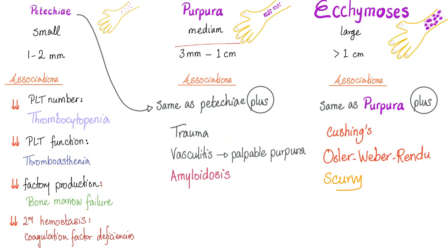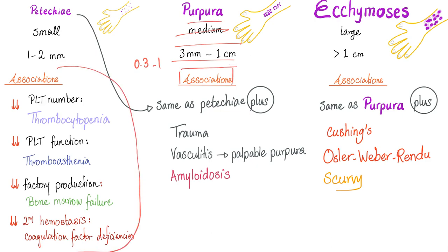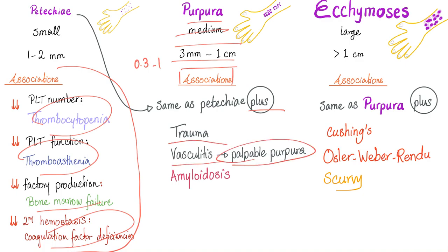Purpura is the in-between: 3 mm to 1 cm, or written as 0.3 cm to 1 cm. Causes of purpura are the same as causes of petechiae: thrombocytopenia, thrombasthenia, bone marrow failure, coagulation factor defect, plus trauma, vasculitis — especially palpable purpura — and amyloidosis, especially systemic generalized amyloidosis.